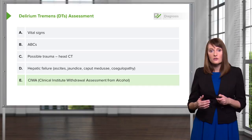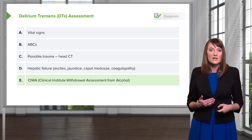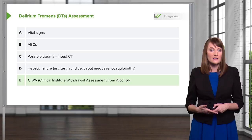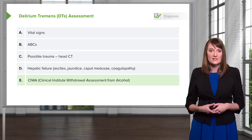On the CIWA scale, you're checking patients for vital sign instability, headaches, nausea, and vomiting. If they're scoring high on the CIWA, you're going to preemptively treat them with a benzodiazepine to help slow down that excitation in their central nervous system.